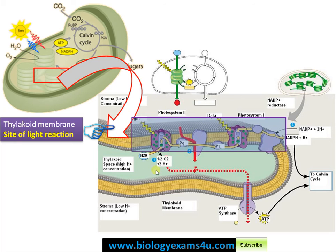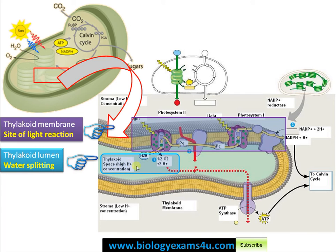Through this light reaction, the energy of sunlight is trapped and converted to chemical energy as ATP and NADPH. In non-cyclic photophosphorylation, electrons must be continuously refilled through a process called photolysis, or splitting of water, which occurs in the thylakoid lumen — the space inside the thylakoid membrane. The site of water splitting is the thylakoid lumen, which refills electrons to Photosystem II and provides H⁺ ions for creating a gradient for ATP synthesis.